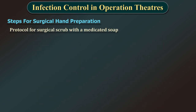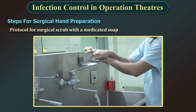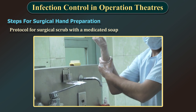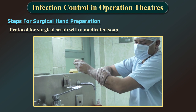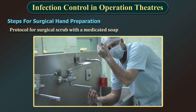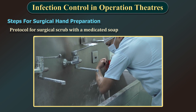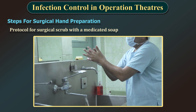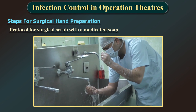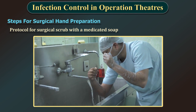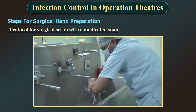For the surgical scrub protocol with medicated soap: scrub each side of each finger, between the fingers and the back and front of the hand for 2 minutes. Proceed to scrub the arms keeping the hand higher than the arm at all times. This helps to avoid recontamination of the hands by water from the elbows. Wash each side of the arm from wrist to elbow for 1 minute. Repeat the process on the other hand and arm. If the hand touches anything except the brush, the scrub must be lengthened by 1 minute for the contaminated area. Rinse hands and arms in one direction only from fingertips to elbow. The steps may be repeated 3 times as recommended by hospital infection control guidelines.